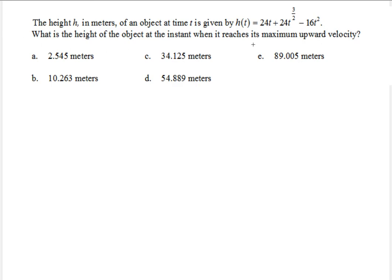Maximum suggests that we should derive not only the velocity function but also the acceleration function, because the acceleration function will give us the chance to find the maximum upward velocity. So we're going to take the first derivative to get the velocity function, and then the second derivative to get the acceleration function. Then we set that acceleration function to zero to find the t value, and plug that into the height function to find the height corresponding to the maximum upward velocity.